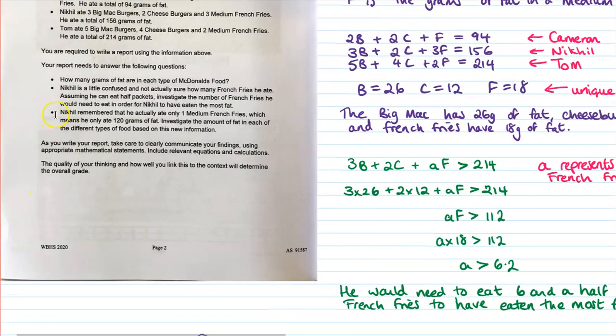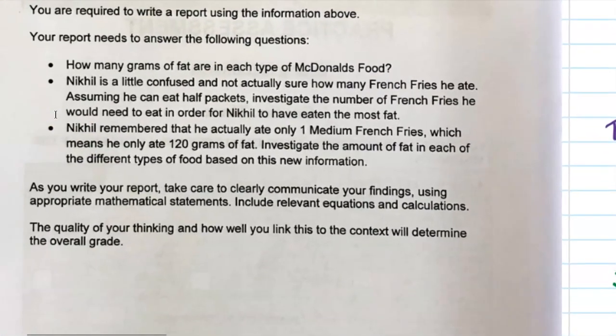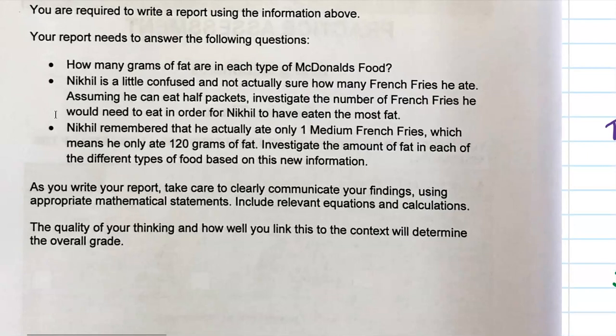And then the last part is that Nicol now remembers that he actually only ate one medium French fries, which means he only ate 120 grams of fat. Now investigate the amount of fat in the different types of food. So he's remembered the information was actually different to what he first stated. So we need to set up our equations again.